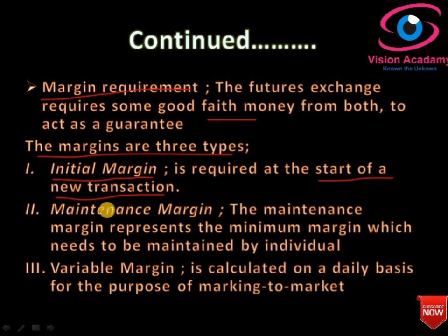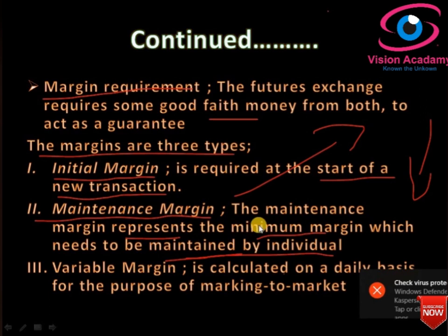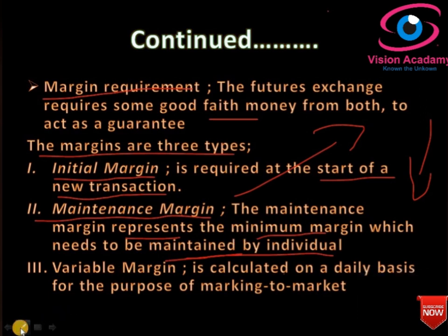For example, the NSE maintains an 11 percent initial margin, though this is not fixed — an exchange can change the required margin at any time. If price volatility increases or if the price of the underlying commodity rises substantially, the initial margin will be increased or decreased accordingly. The second type of margin is the maintenance margin, which is a minimum amount you must maintain in your account, just like a bank requires you to maintain a minimum balance.